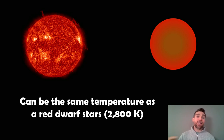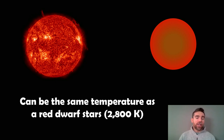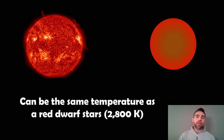Whereas in a red dwarf, they're slightly more massive, so they can fuse hydrogen in their core into helium. They are pretty much the same sort of colour, so they can be quite hard to distinguish between the two.